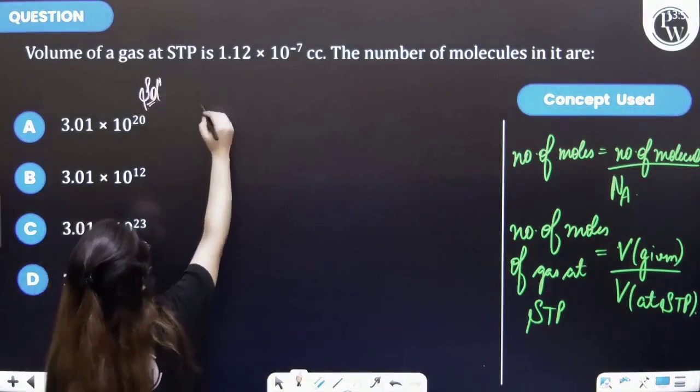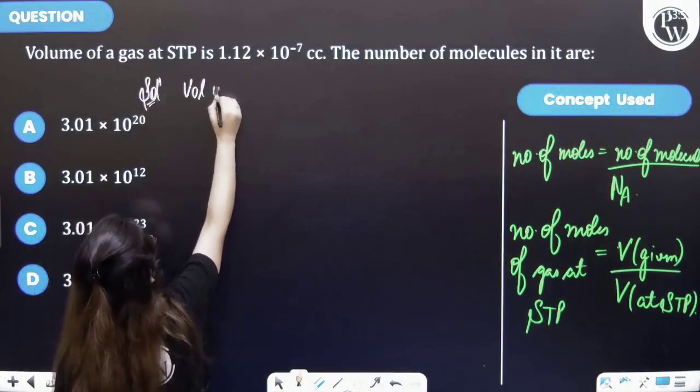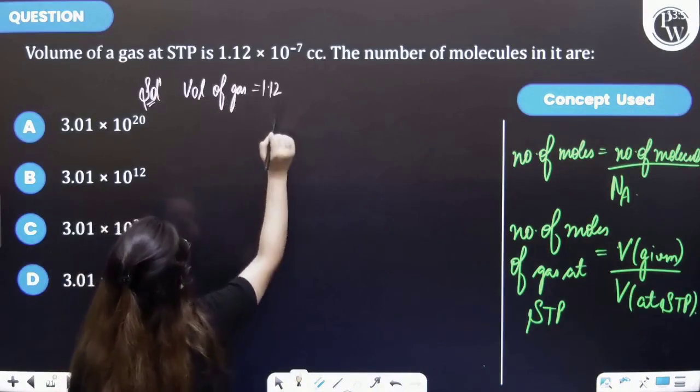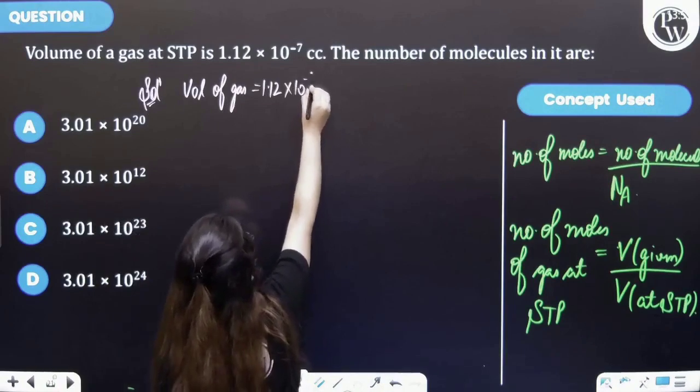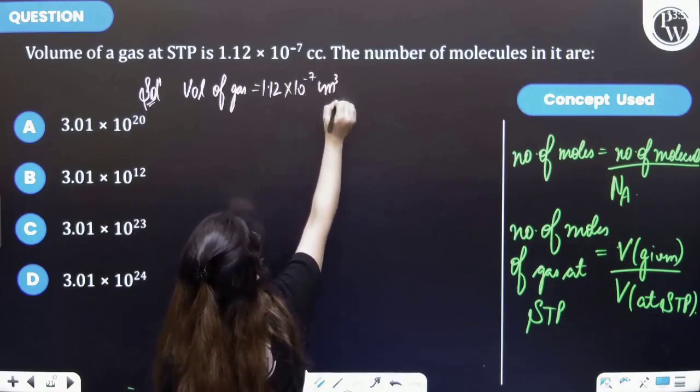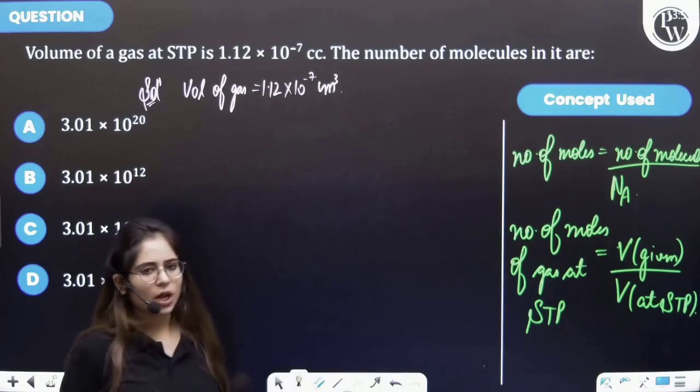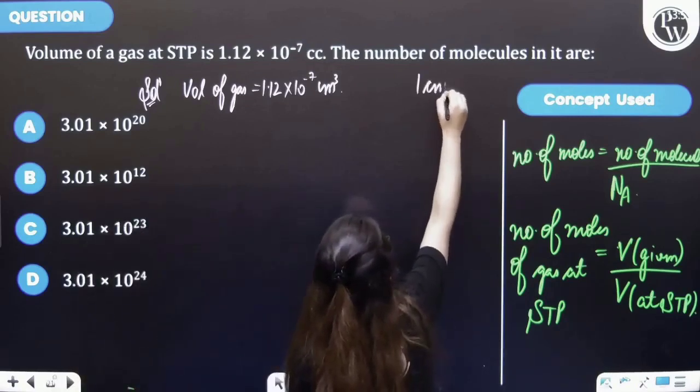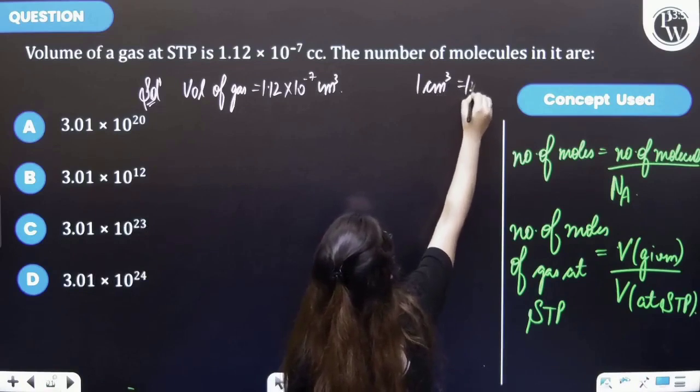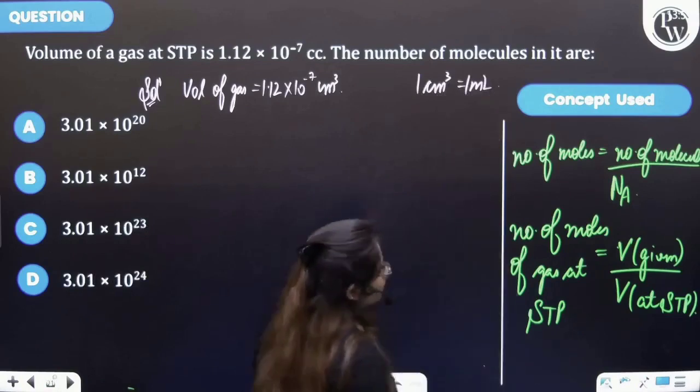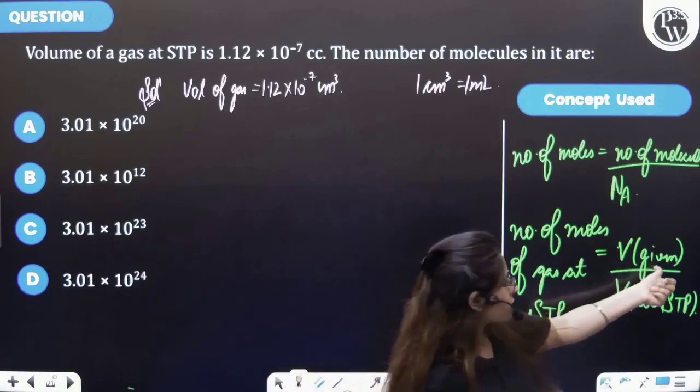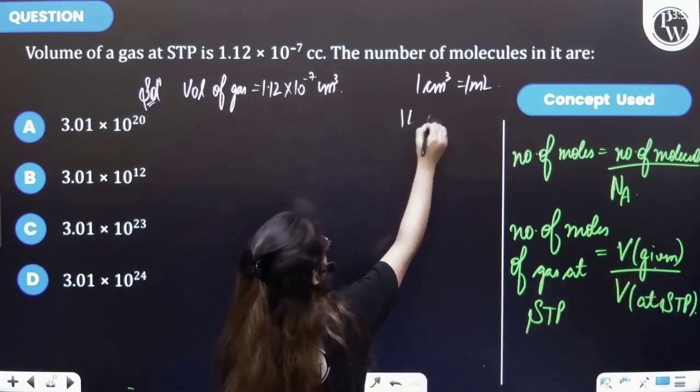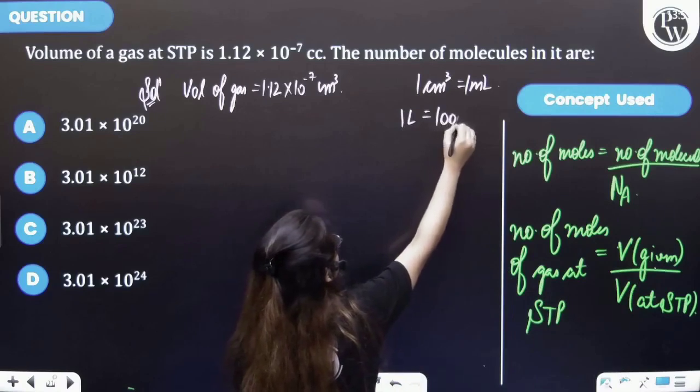So volume of gas is 1.12 into 10 raised to the power minus 7 centimeter cube. Now 1 centimeter cube is equal to 1 milliliter. But the volume that you have to use here should be in liters and 1 liter is equal to 1000 milliliter.